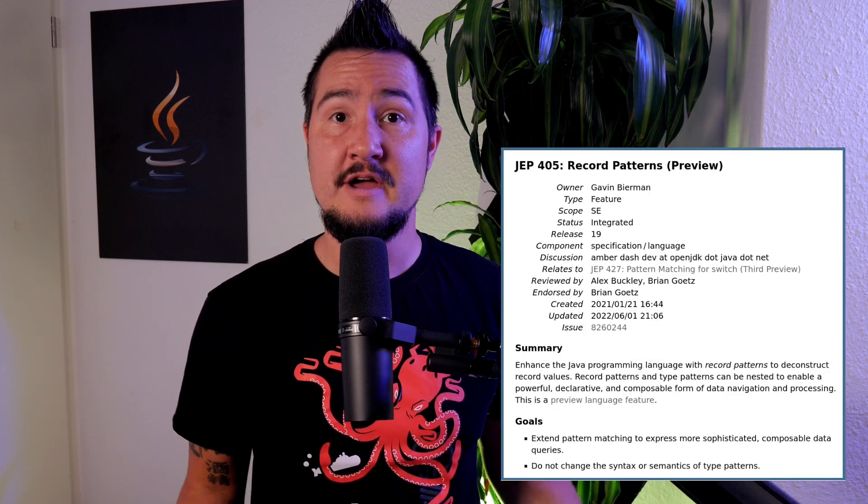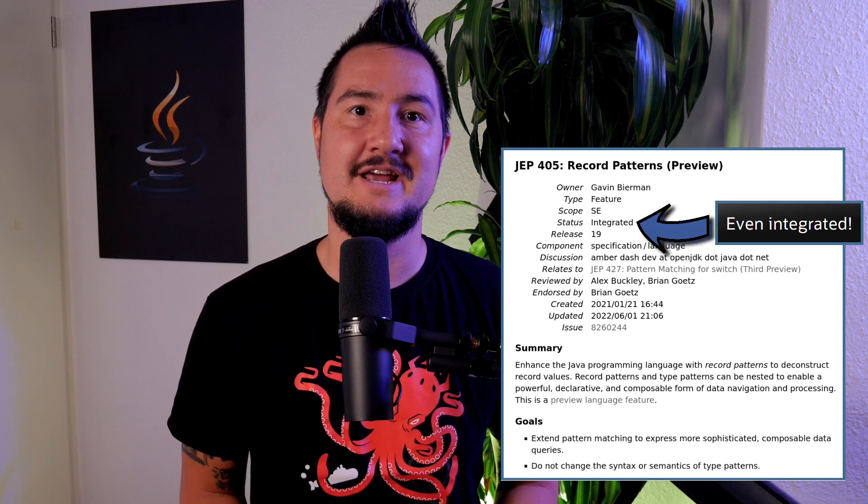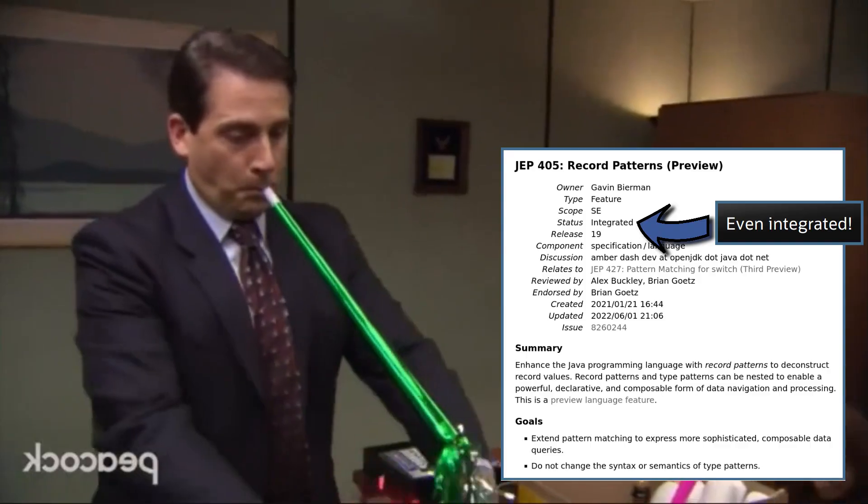Welcome everyone to the Inside Java Newscast, where we cover recent developments in the OpenJDK community. I'm Nicola Parlock, Java Developer Advocate at Oracle, and today we're going to look at JDK Enhancement Proposal 405, which proposes to preview record patterns. As we hoped for in the last newscast, it has indeed been targeted for JDK 19.